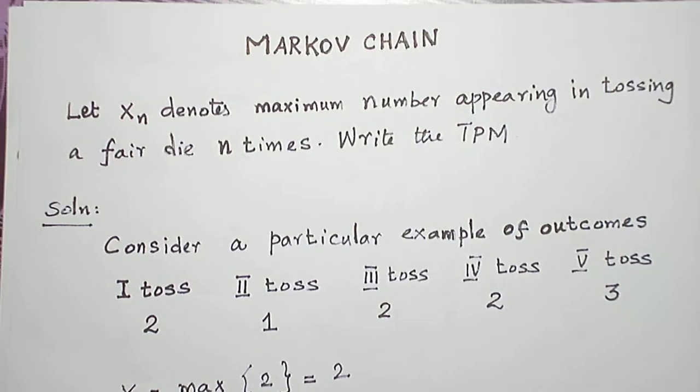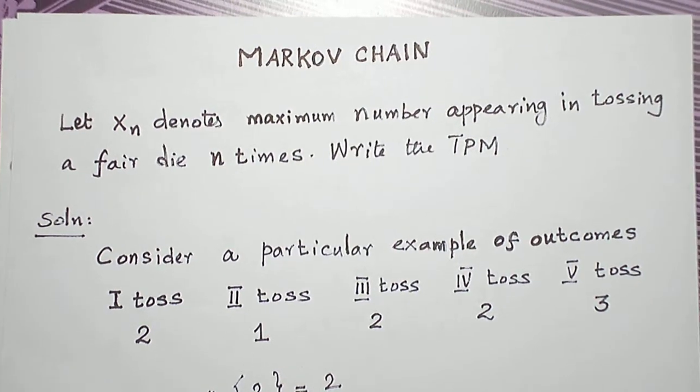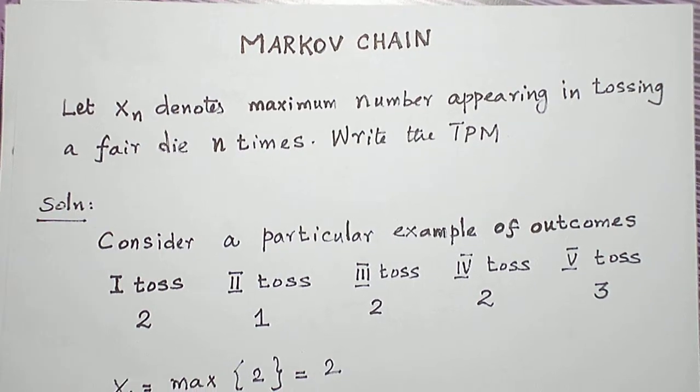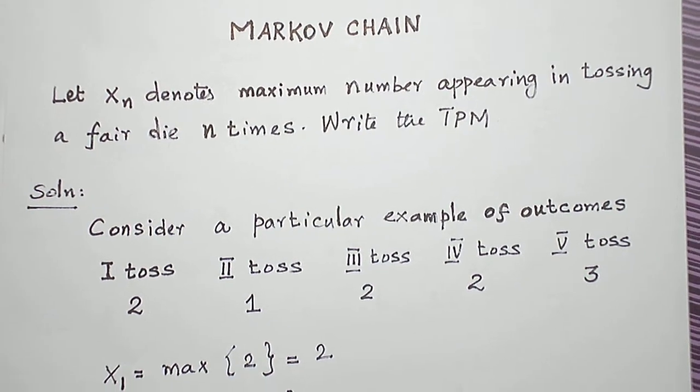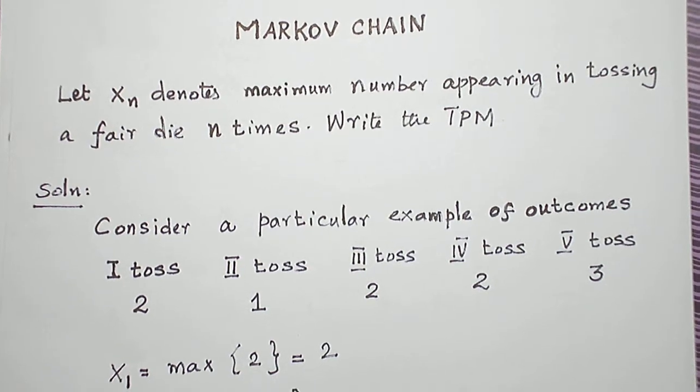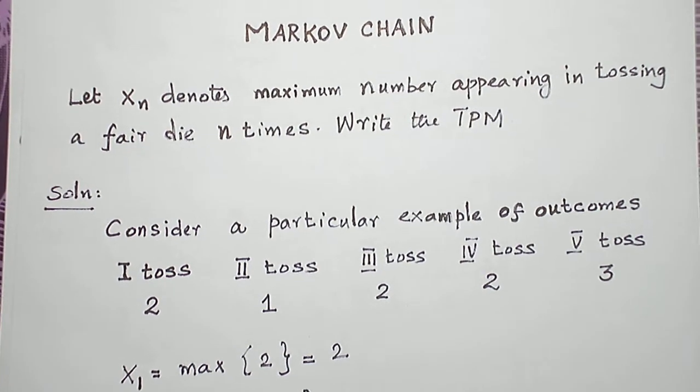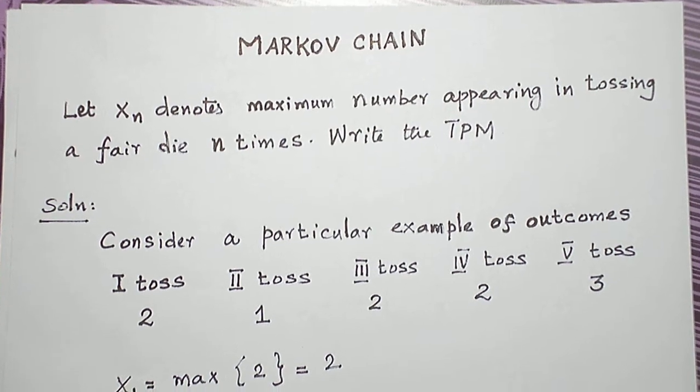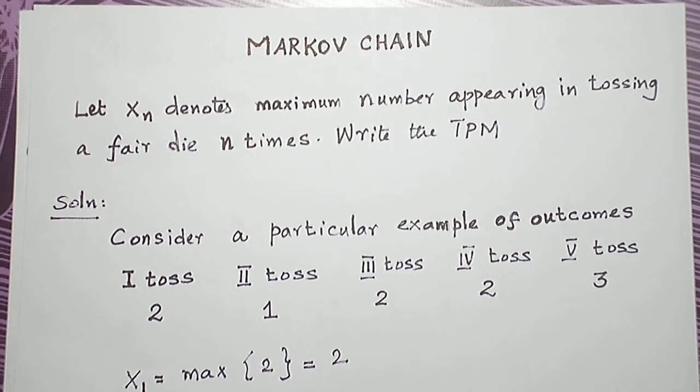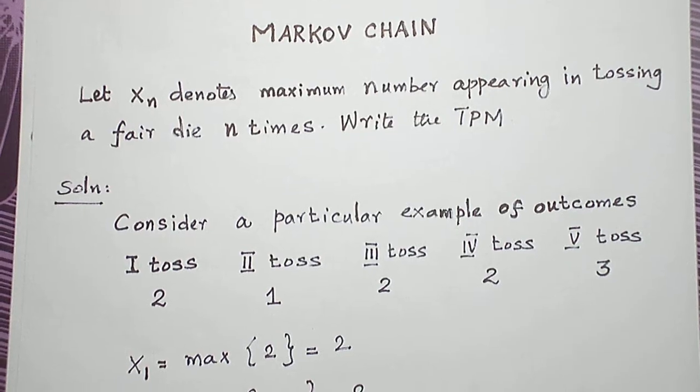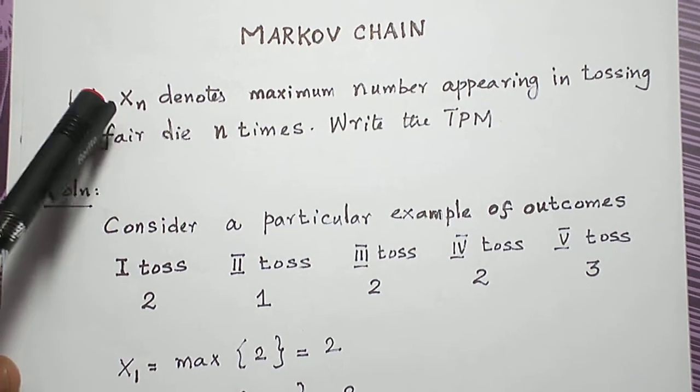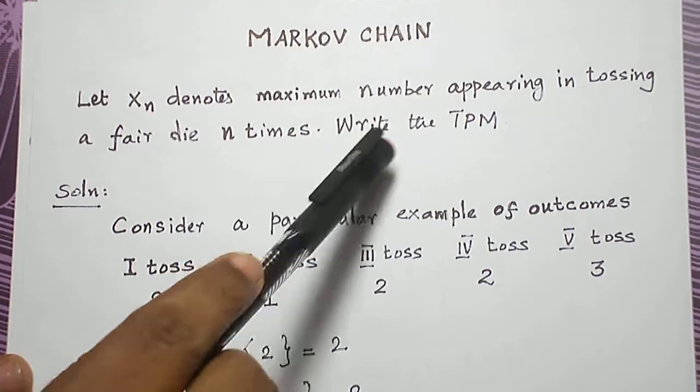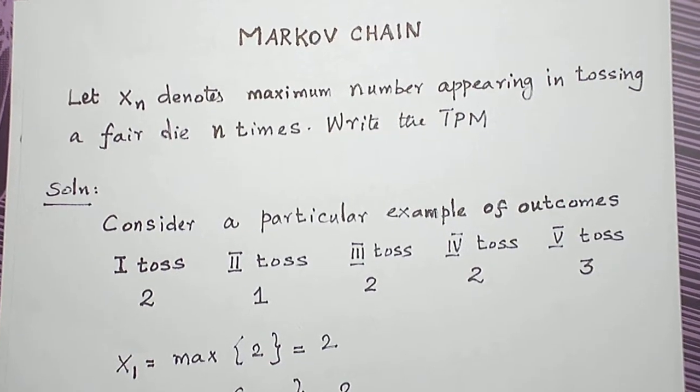Hello students, today let us see a problem from the topic Markov chain. A fair die is going to be tossed n times. We will get n numbers, not necessarily all different. Numbers 1 to 6 will appear. We have to choose the maximum number as Xn, so Xn is the maximum among these n numbers, and we are asked to write the TPM.